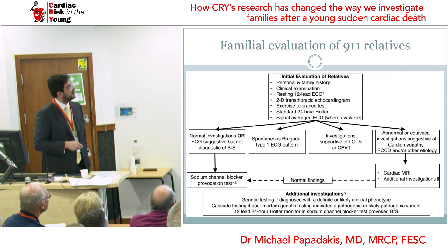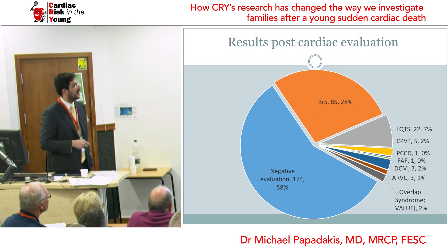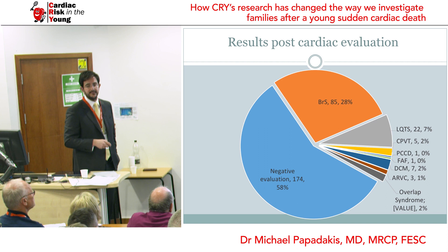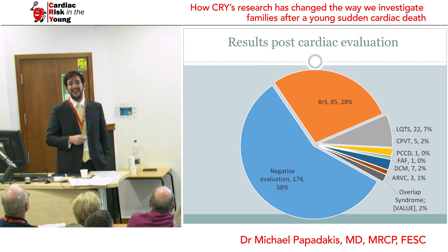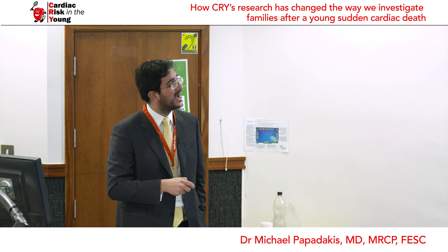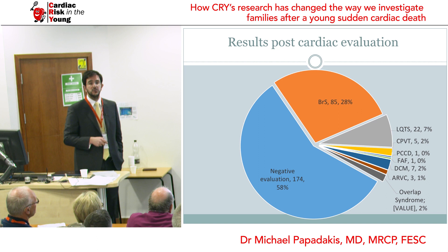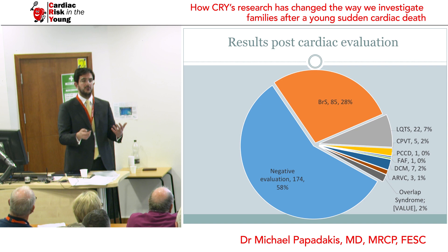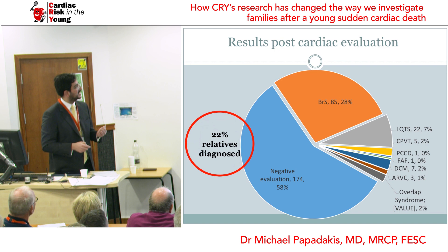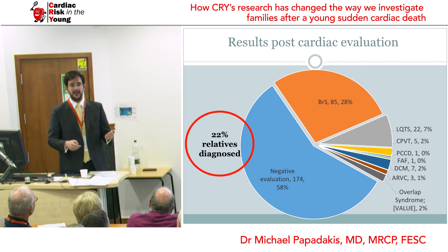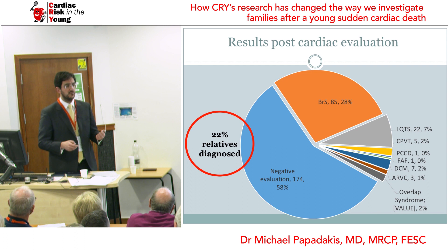Following comprehensive investigation, we identify a diagnosis in about 42% of families. The majority are electrical faults of the heart. In our cohort, Brugada syndrome predominates, followed by long QT syndrome, CPVT, and a small proportion with a cardiomyopathy the pathologist was unable to identify. Very importantly, almost a quarter of relatives coming to see us with no idea they have a condition get diagnosed and receive necessary advice. That's the difference these clinics are making.